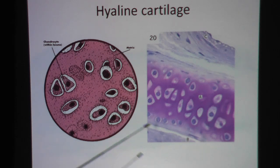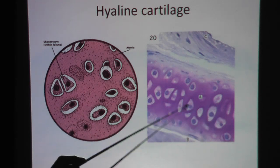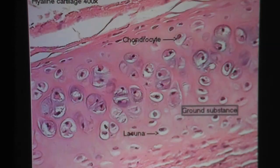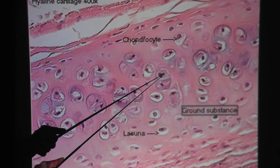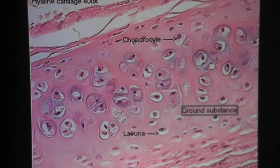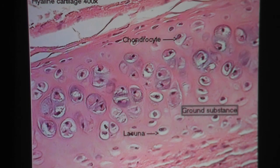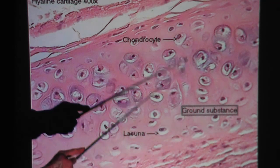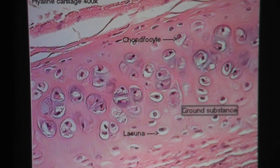Here's another look at hyaline cartilage. Once again, you have your chondrocyte in lacuna, and the matrix has that watercolor look. Here's another view — chondrocytes in lacuna. If you look at the matrix, there are no collagen fibers visible, so this is not fibrocartilage. And of course there are no elastic fibers, so this is not elastic cartilage. Instead, you get this very homogeneous watercolor look. Homogeneous means it's very constant — it doesn't change a whole lot.